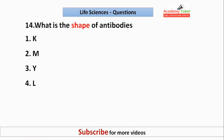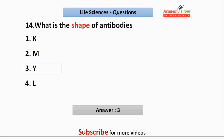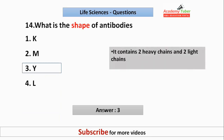What is the shape of antibodies? The answer is Y-shape. An antibody contains two heavy chains and two light chains, which are linked by disulfide bonds.